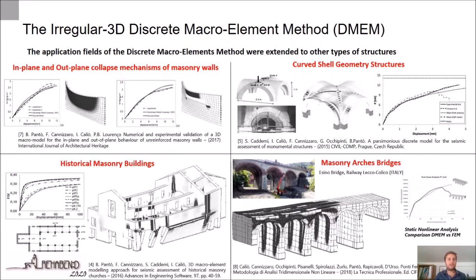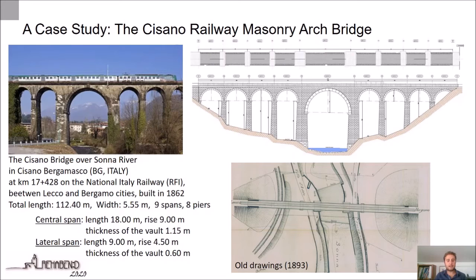The application fields of the discrete macro-element method were extended to other types of structures, in order to simulate the in-plane and out-of-plane collapse mechanisms of masonry walls, the collapse mechanisms of curved shell geometry structures, and the collapse mechanisms of historical masonry buildings. The last study was oriented to the evaluation of the bearing capacity of masonry arch bridges, subjected to traffic load and seismic action.